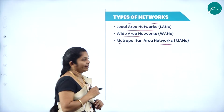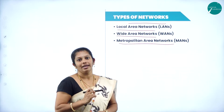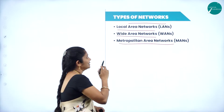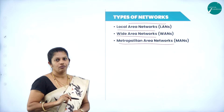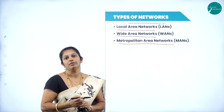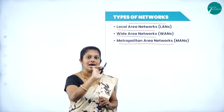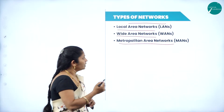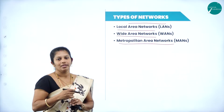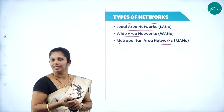When we come to Wide Area Network, the name itself suggests that it covers a large geographical area — from one country to another country, we can communicate. Metropolitan Area Network is in between LAN and WAN. For example, from one city to another city, we can transfer data.